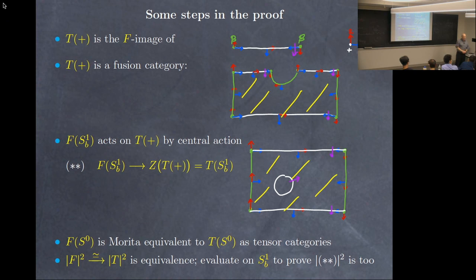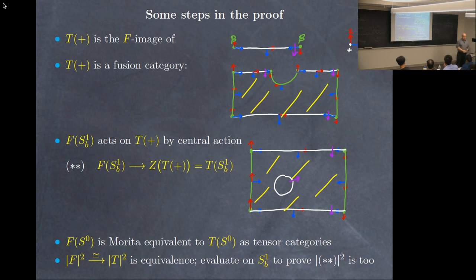In higher dimensions, do you still expect that if you have a non-zero topological boundary condition, you need the higher theory evaluated on a circle — the equivalent of being the Drinfeld center? You would need some model for the higher category that would be the codomain, and there's a general list on the arXiv. Thanks.